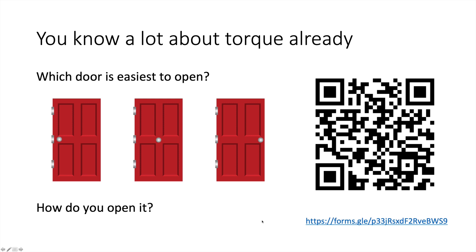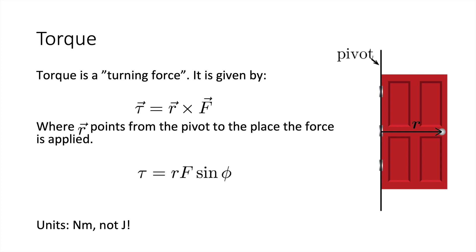You already know quite a lot about torque. Consider doors with the handle and hinges marked — the door with the handle far from the hinges is easiest to open. You open it by applying a force on the handle perpendicular to the door. This force is a torque, a turning force. The equation for torque is tau = r × F.